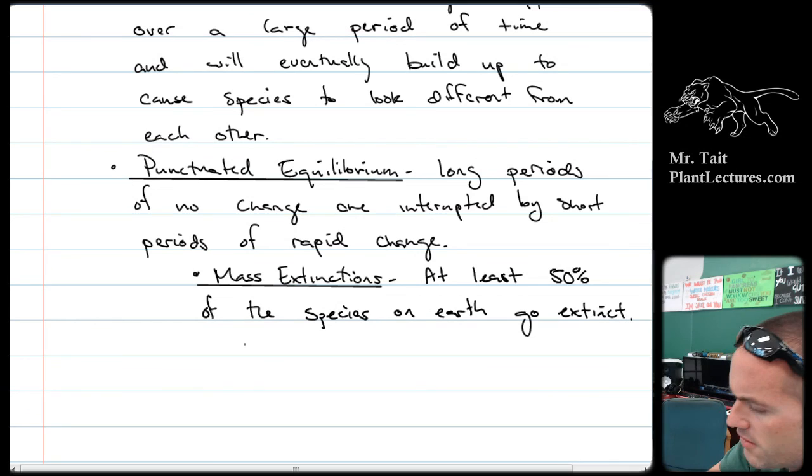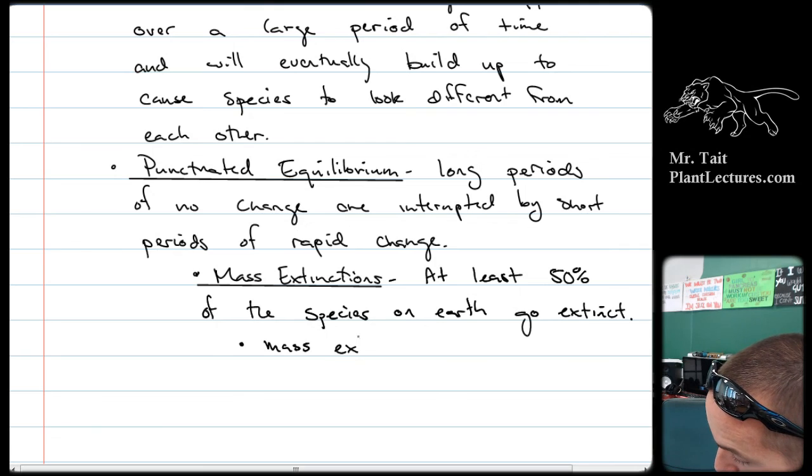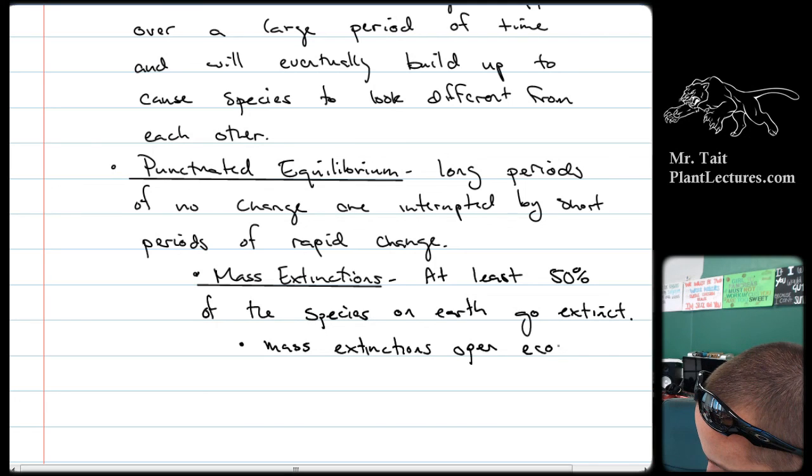But the important thing to understand about mass extinction is and why they lead to punctuated equilibrium is that when things die, the thing that they used to do within their ecosystem, their ecological niche, is now unfilled, right? So it's really easy for other organisms to go in and fill those niches, right? So mass extinctions open ecological niches.